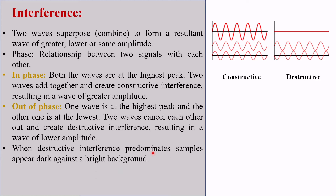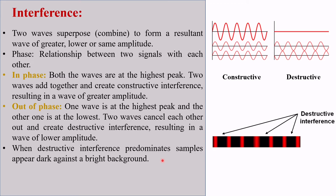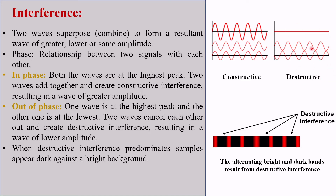One thing should be clear: when destructive interference predominates, samples appear dark against a bright background. Please remember this till the end of this video — when destructive interference predominates, samples appear dark against a bright background. This is a very important point to remember.